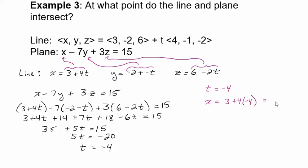That gives me negative 16 plus 3. My y value is going to be negative 2 minus negative 4, that's 2. And my z value is going to be 6 minus 2 times negative 4, that's 14.